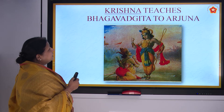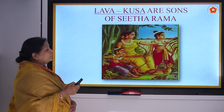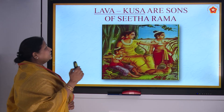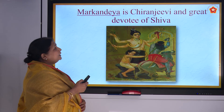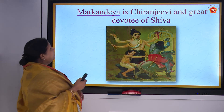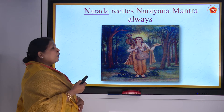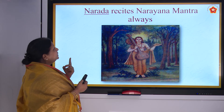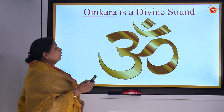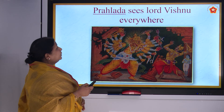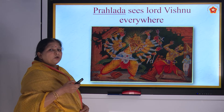L — Lava and Kush are sons of Sita and Rama. M — Markhandeya is Chiranjivi and a great devotee of Shiva. N — Narada recites the Narayana mantra always, saying Narayana, Narayana. O — Omkar is a divine sound. P — Prahalada sees Lord Vishnu in everything; he is the son of Hiranyakashipu.